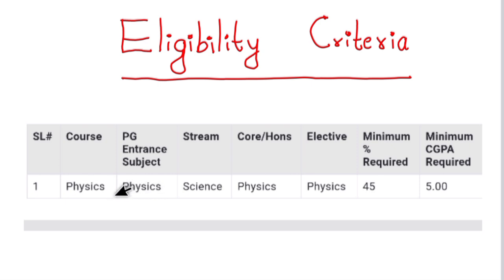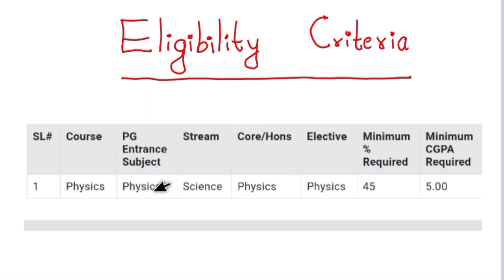For the CPT exam, your final goal is to be admitted to a university or an autonomous college in Physics. If you have the eligibility criteria but do not yet have your final result, you can still apply. Students awaiting results can apply provisionally.